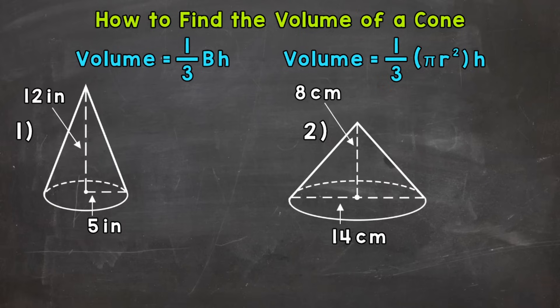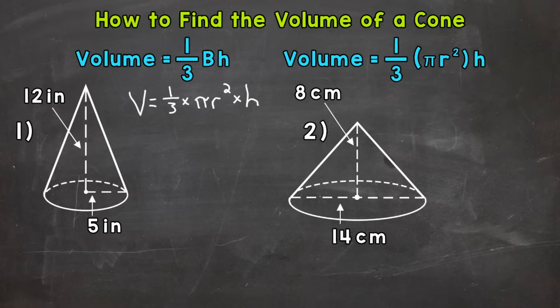Now we'll talk about why we multiply by 1/3 after we finish number 1 — knowing why we do this will give us a better understanding of the formula. So let's jump into number 1, where we have a cone with a base radius of 5 inches and a height of 12 inches. The first thing that we need to do is write out our formula. So volume equals 1/3 times π r squared, since we have a circular base, times the height.